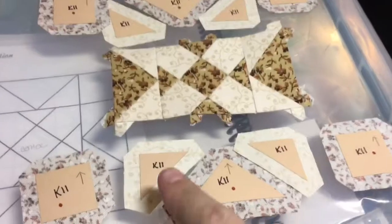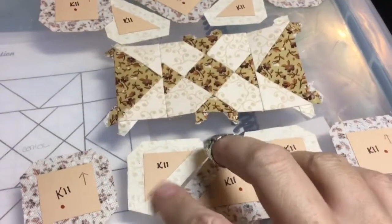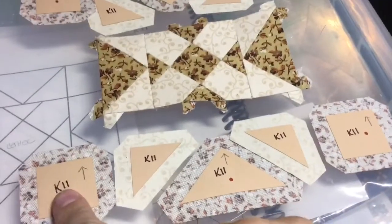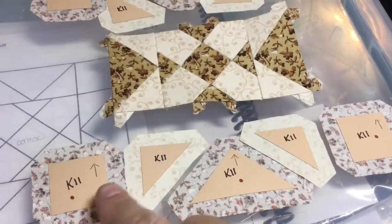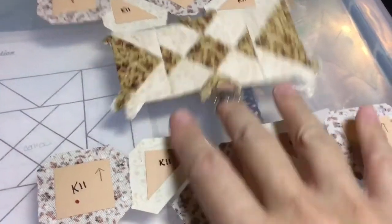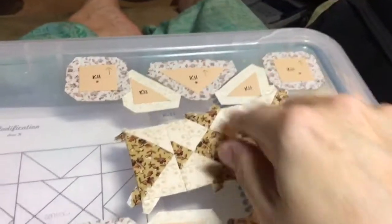Next I'm going to assemble this flying geese section and then attach each of the side squares so that I can make this row attached to this row and the same thing up here.